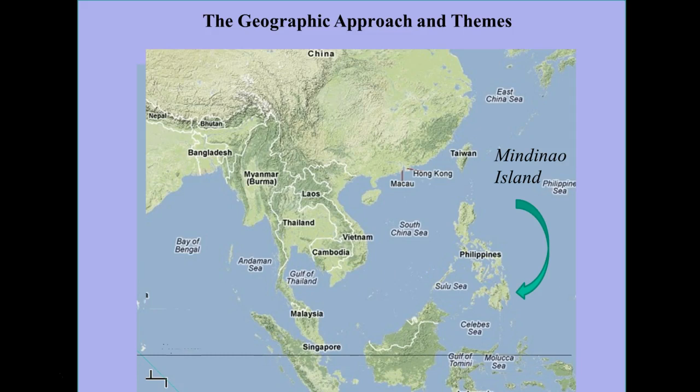If we put in a little bit more context, we could see that it's a little bit north of the equator. Indeed, we can attach a location to it in the form of latitude and longitude: 8.1 degrees north latitude, 120.86 degrees east longitude — east of the prime meridian, north of the equator.